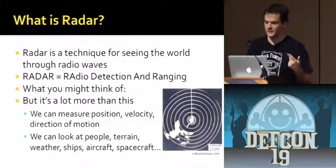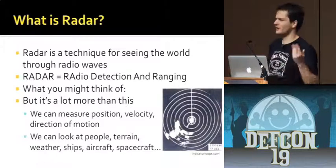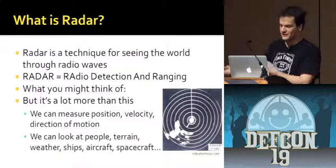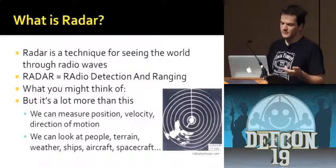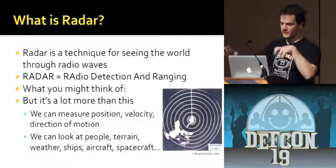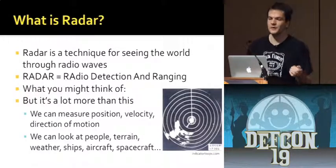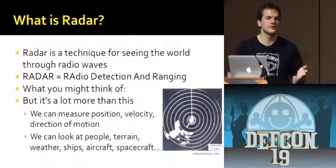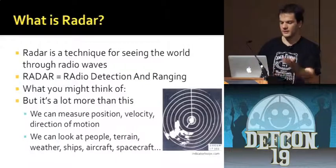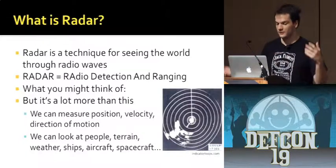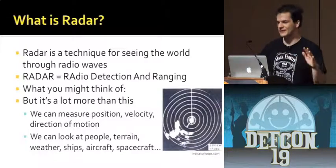What you might think of traditionally is something like a weather radar from the 1940s. What you're measuring is essentially position of something, velocity of something, direction of motion. But you can actually do a lot with this type of technology. You can look at pretty much anything — people, terrain, land surface, foliage, weather patterns, clouds, rain, ships, aircraft, spacecraft — pretty much anything you can think of.